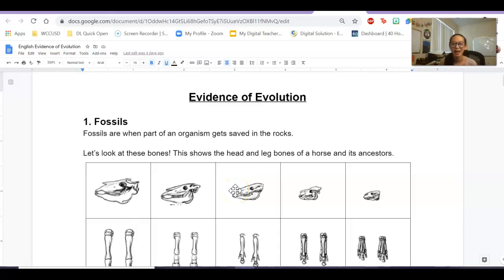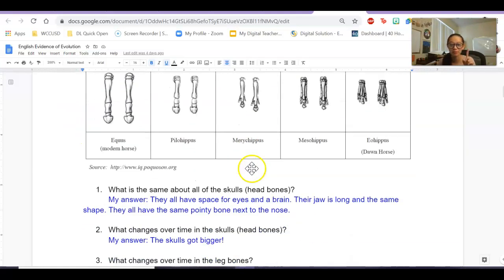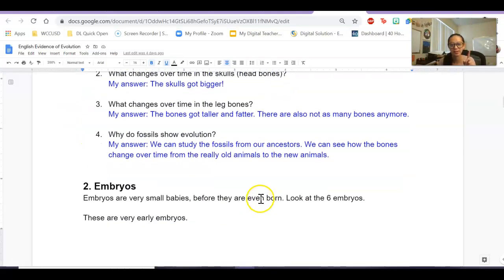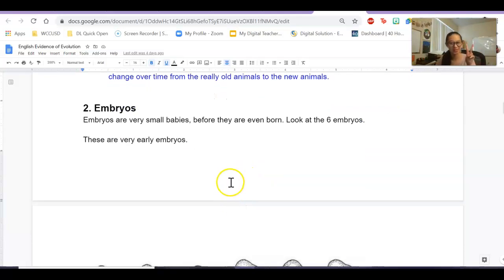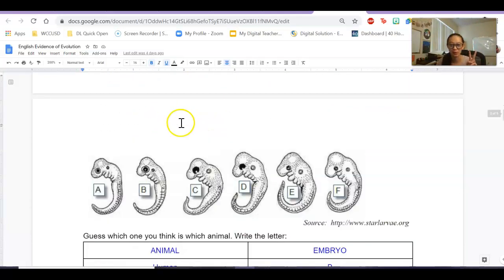Hello, everyone. So I can't be in class today, but here is the homework. We're going to finish our evidence of evolution worksheet that we started on Thursday and Friday. So we already did part one about fossils and we wrote our answers, and we already did part two about embryos.